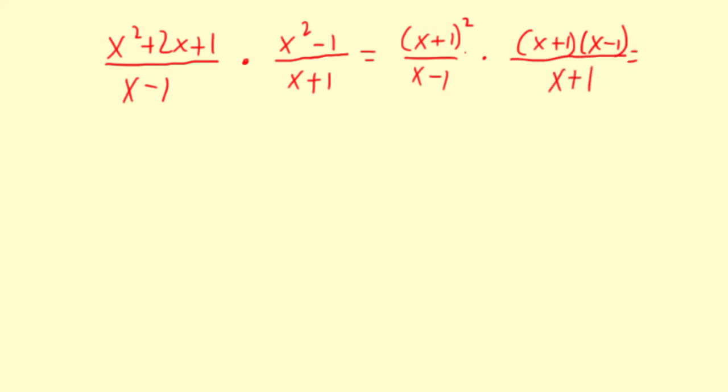Okay, now I'm just going to multiply everything. So it's going to be x plus 1 squared times another x plus 1 times x minus 1 divided by x minus 1 times x plus 1.